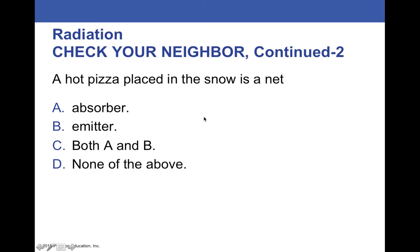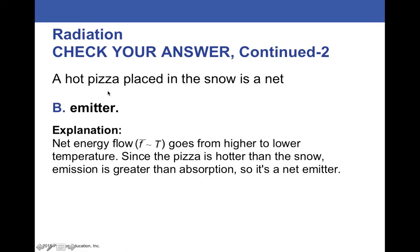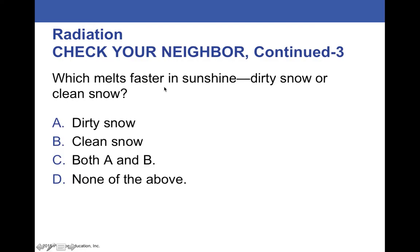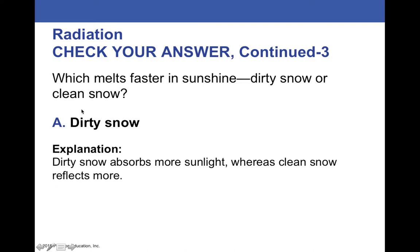A pizza placed in the snow would be a net. Go ahead and fill in the blank. Pause if you need to. Emitter. Because the pizza is hotter than its surroundings, it's going to be losing energy. Which melts faster in sunshine, dirty snow or clean snow? Dirty snow. Basically because the sunlight is going to be absorbing into the dirt that's on top of the snow and causing the snow to melt.